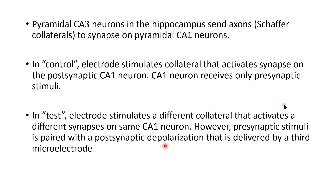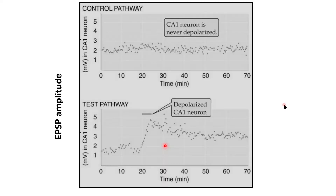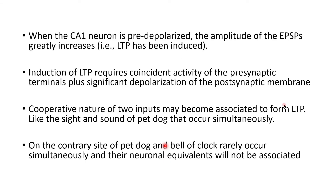In the control condition, the electrode stimulates collaterals that activate synapses on the post-synaptic CA1 neuron, which receives only pre-synaptic stimuli. In the test condition, the electrode stimulates a different set of collaterals that activates the same CA1 neuron; however, the pre-synaptic stimuli is paired with a post-synaptic partial depolarization delivered via a third microelectrode. The result shows that in the control, where the CA1 neuron is never depolarized, the EPSP amplitude is quite low, but where pre-synaptic stimulation is paired with post-synaptic depolarization, the EPSP amplitude is quite high. When the CA1 neuron is pre-depolarized, the amplitude of EPSPs greatly increases, meaning LTP has been induced.